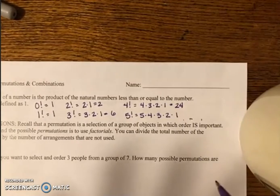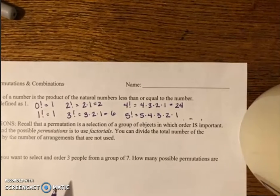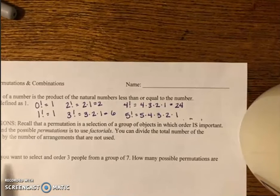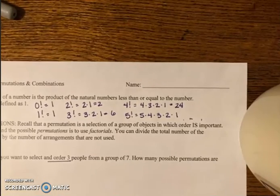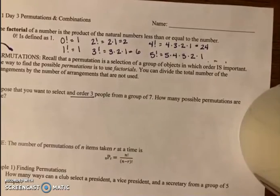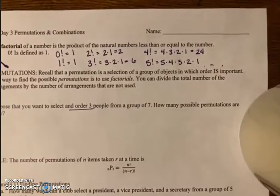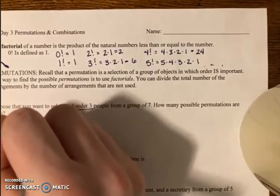The reason why it's important is we're going to see that in the rules for permutations. Permutation—we had said before that order does matter. If we take a look at this example here, it says suppose you want to select and order—keyword there is order—three people from a group of seven. How many possible permutations are there? So if we were writing the rule, that's P-7-3.